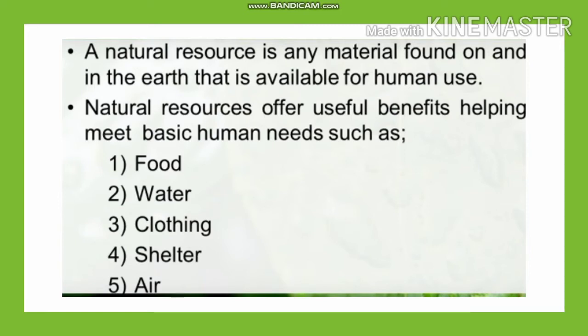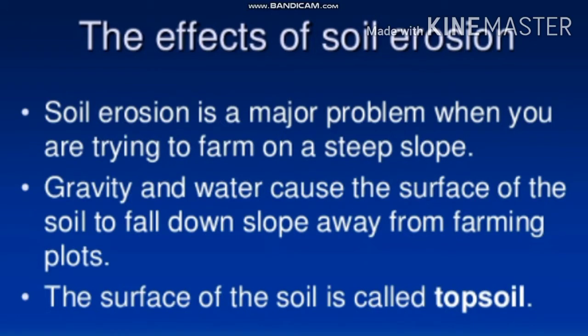Natural resources offer useful benefits, helping meet the basics of human needs such as food, water, clothing, shelter, and air. The effects of soil erosion: soil erosion is a major problem when trying to farm a steep slope, as gravity and water cause the surface of the soil to fall downslope away from farming plants.